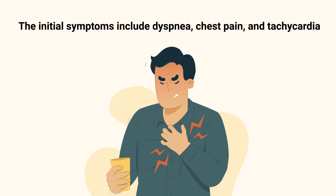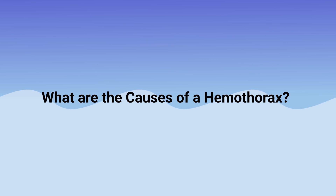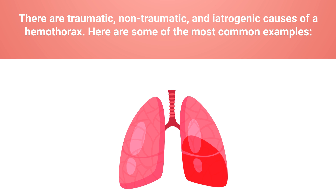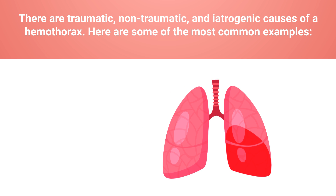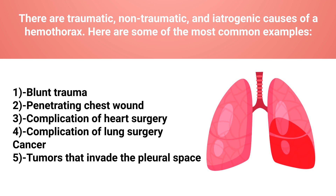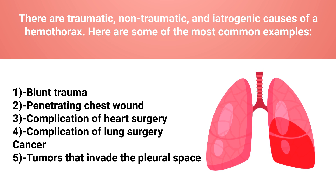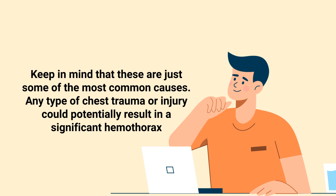The initial symptoms include dyspnea, chest pain, and tachycardia. There are traumatic, non-traumatic, and iatrogenic causes of a hemothorax. Some of the most common examples include blunt trauma, penetrating chest wound, a complication from heart surgery, a complication from lung surgery, and cancer and tumors that invade the pleural space.